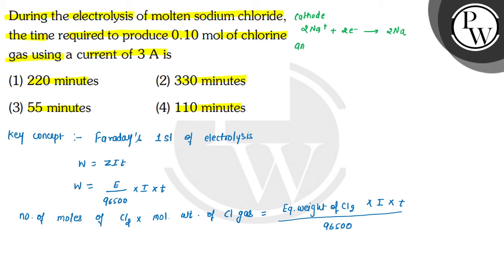At anode, 2Cl minus will convert into Cl2 and 2 electrons will be released. So here Cl minus oxidation state minus 1 becomes 0, so oxidation state increased. This is oxidation.